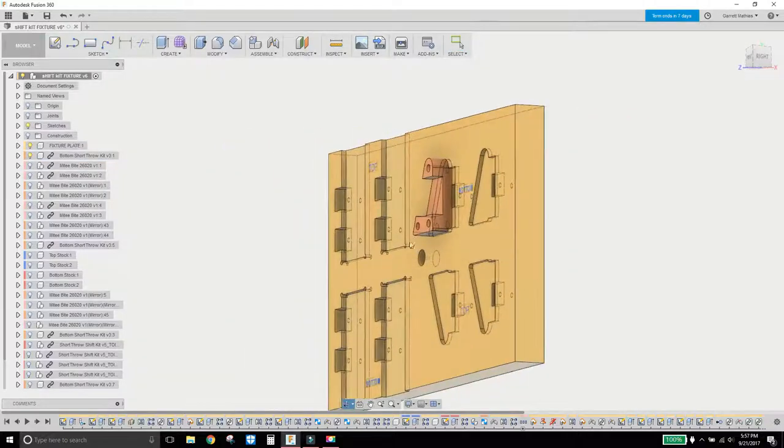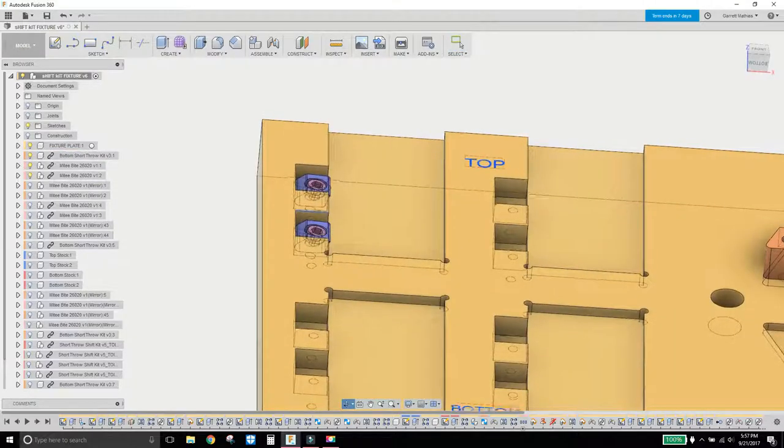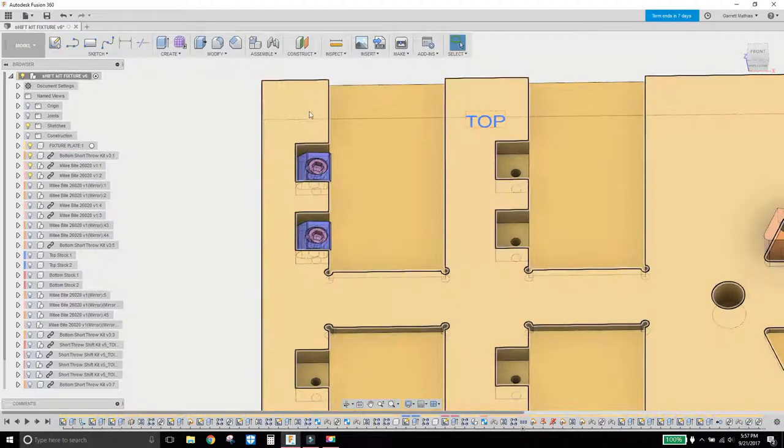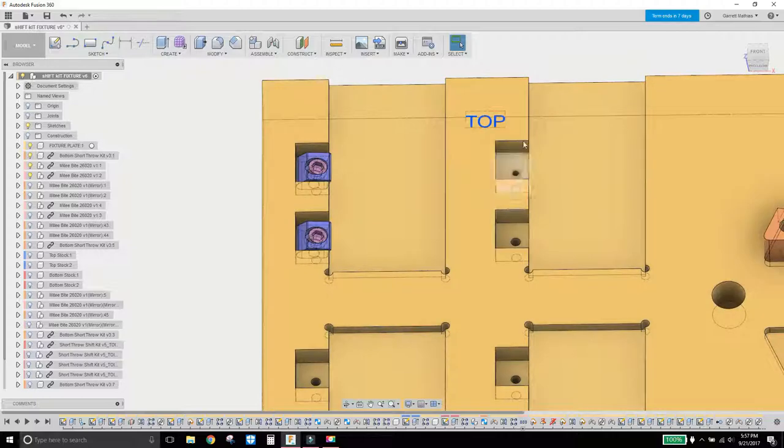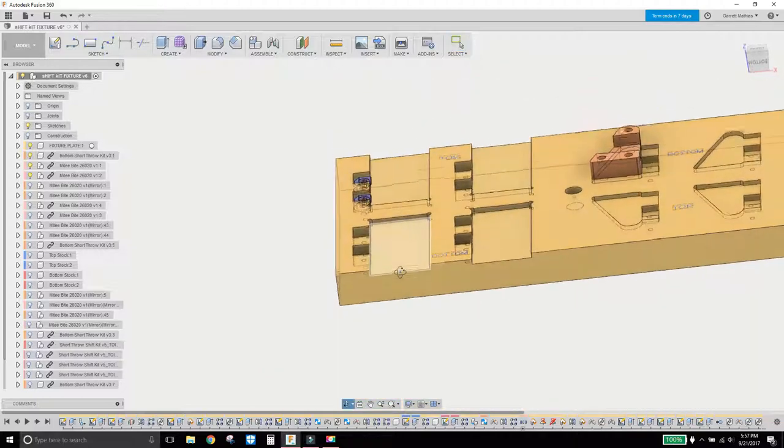There is one side of the short throw shift kit and I milled out some pockets here rather than having this channel through here, so that should work out a little bit better. Apparently it makes it just slightly more rigid in the whole fixture itself.